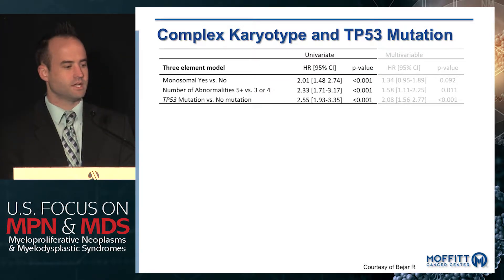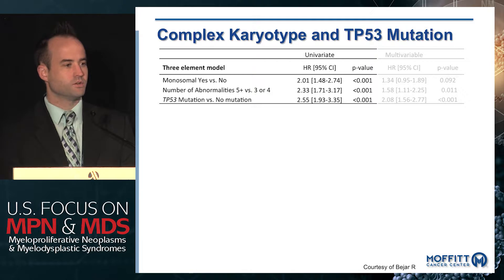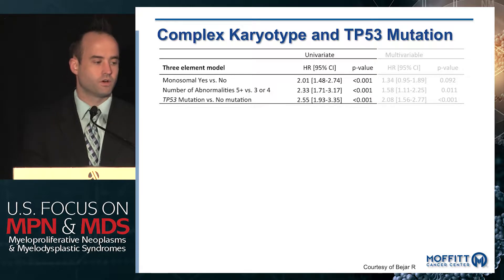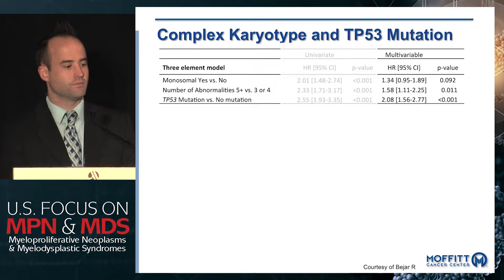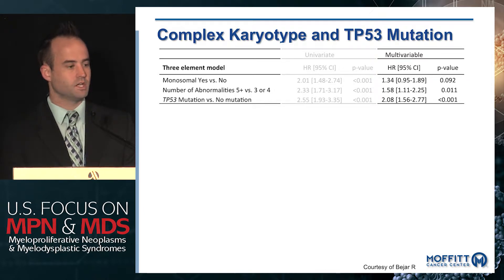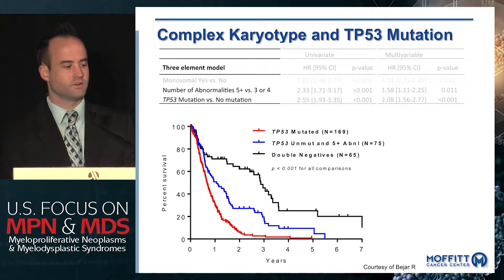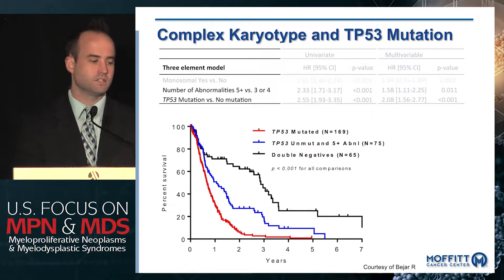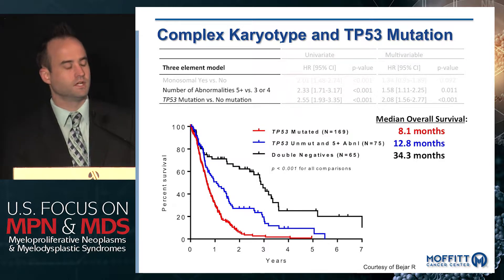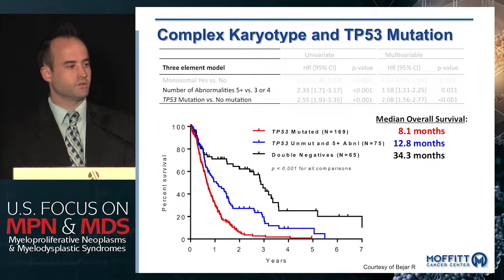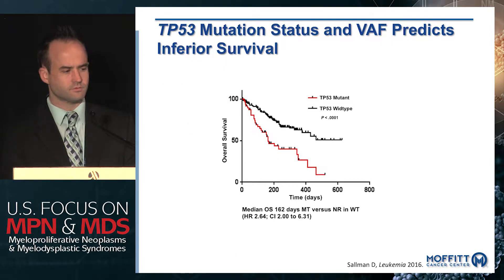Looking at complex karyotype: is all complex karyotype created equal? The answer is no. In nearly 300 patients with complex karyotype, univariate analysis showed that monosomal karyotype, five or more abnormalities versus three or four, and p53 mutation predicted for poor outcomes. In multivariable analysis, only having more than five abnormalities or p53 mutation predicted for inferior outcomes, with p53 mutation associated with a very dismal survival of only six to twelve months.